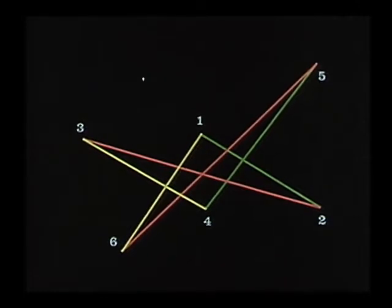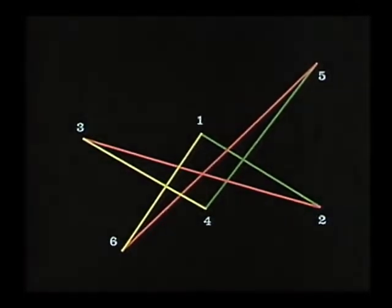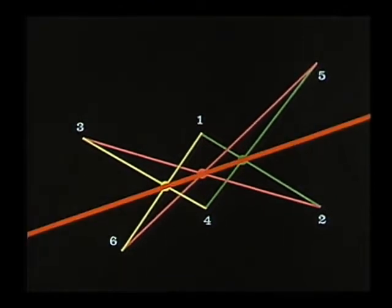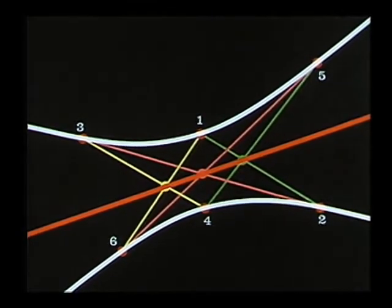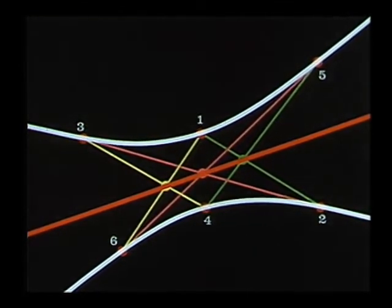The converse of Pascal's theorem is the interesting thing, and that's the thing that we're going to use. It says, given a hexagon whose opposite sides intersect in collinear points, then the vertices of the hexagon must lie on a conic. So the important theorem for us says, if a hexagon has its opposite sides meeting in collinear points, then the vertices of the hexagon must lie on a conic. And this will give us a linear construction or a projective construction for a conic.